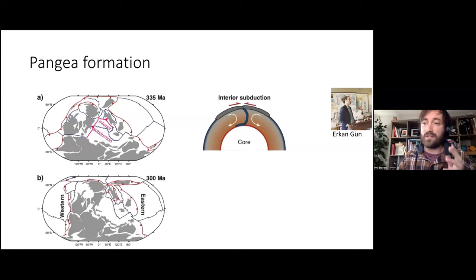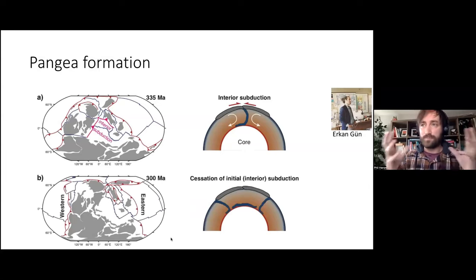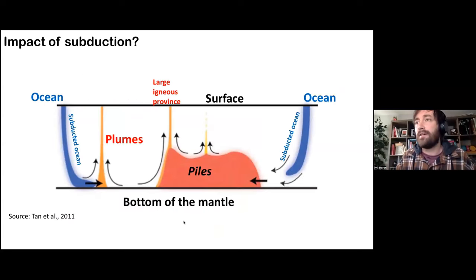By 300 million years, you have this cessation of the interior subduction and you've got this focused subduction around the outside. If you have this as the surface and this is the bottom of the mantle, you could have focusing of mantle flow beneath the supercontinent which could in turn generate mantle dynamics that can trigger upwellings in the form of plumes, which could manifest itself as large igneous provinces at the surface. Just kind of simple mantle scooping up thermal instabilities due to subduction and oceans converging on the mantle dynamics below.